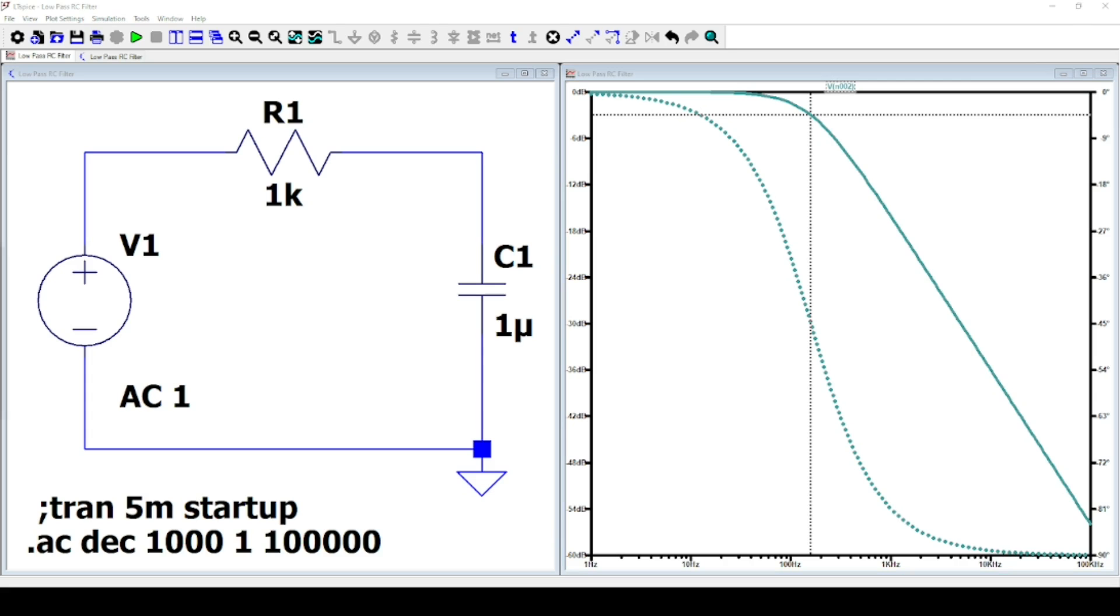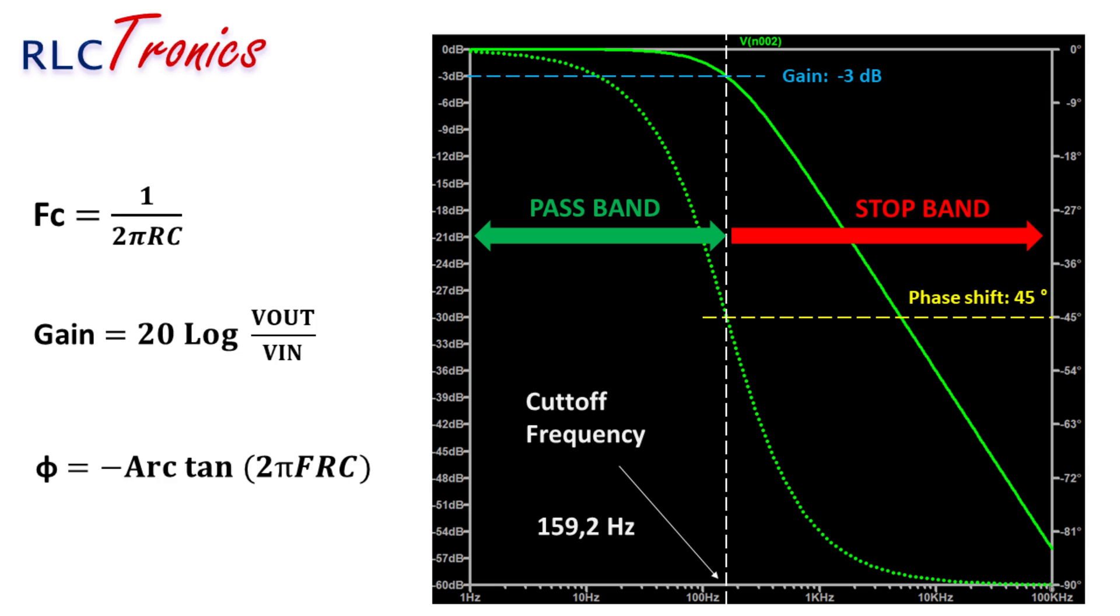On the gain curve, the cutoff frequency is always situated at minus 3 dB, and on the phase shift curve, it is situated at minus 45 degrees.